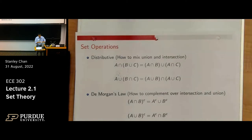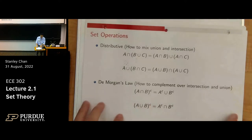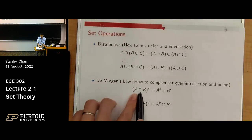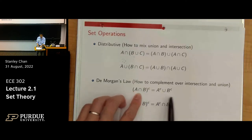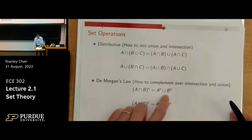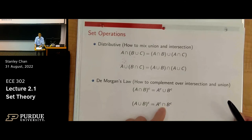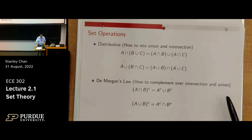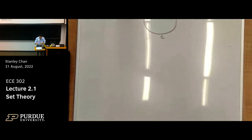Now let's talk about De Morgan's law. The theorem says: if you take the complement of (A intersect B), you get the union of the two complements — A complement union B complement. If you flip it around, the complement of (A union B) becomes the intersection of the complements — A complement intersect B complement.